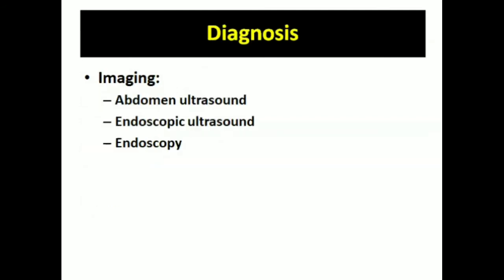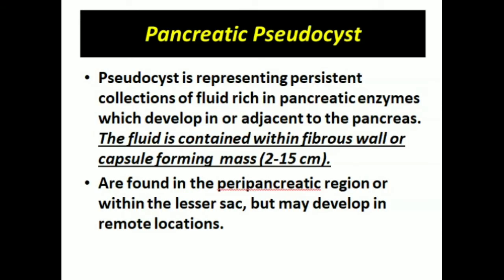For diagnosis, imaging modalities such as ultrasound, endoscopic ultrasound, endoscopy, and CT scan all play a role. A pseudocyst represents a persistent collection of fluid rich in pancreatic enzymes, developing in or adjacent to the pancreas. The fluid is contained within a fibrous capsule, forming a mass that may measure 2 to 15 centimeters. Pseudocysts are found in the peripancreatic region or within the lesser sac, but may develop in remote locations.